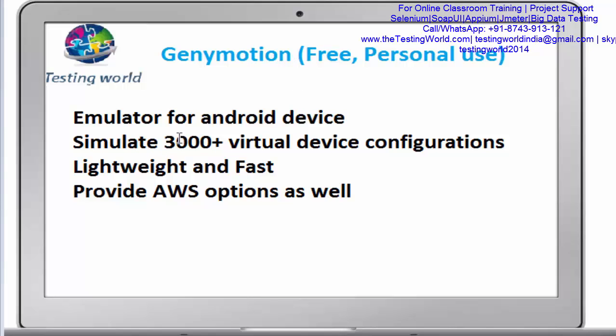Genymotion also provides an AWS — Amazon Web Services — option. Whatever test cases we have created, we can use the AWS option to execute them remotely, so we do not need to set up any emulator on our own machine.